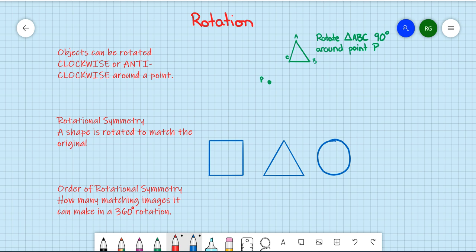Now, objects can be rotated either clockwise or anticlockwise. They also have rotational symmetry. So a shape that can be spun around 90 degrees and then appear to be the original shape is said to have rotational symmetry.